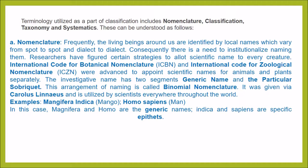For the plant family and for the animal family they have different groups which give specific scientific names. They investigate the name as two segments: the generic name and the particular specific name. The generic name gives us a general idea, while the specific name gives us a particular group. This arrangement of naming is called binomial nomenclature. It was given by Carlos Linnaeus and is utilized by scientists everywhere throughout the world.